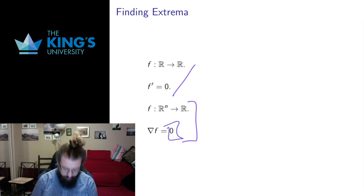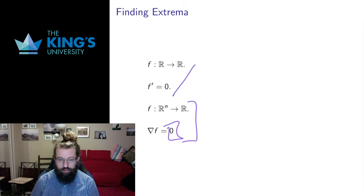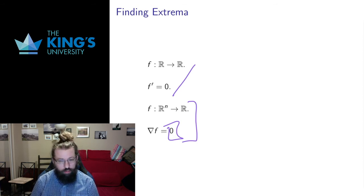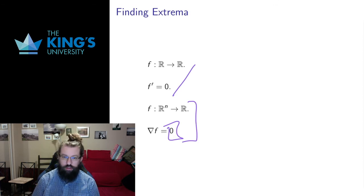This, of course, is the zero vector, the gradient is a vector. So we'll find extrema when the gradient is a zero vector. Notice all of the partials have to vanish, not just one. It's not good enough to just have one of the partials be zero, all of the partial derivatives have to be zero to give ourselves an extrema.